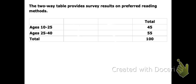Let's look at the total number of people broken down by age. The total number of people is right here, showing that 45 people out of 100 are between ages 10 and 25, and 55 of those 100 people are between the ages of 25 and 40.